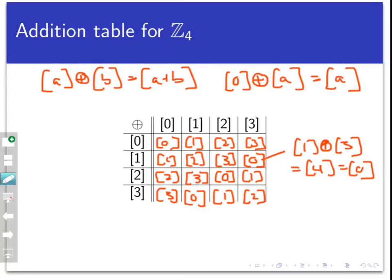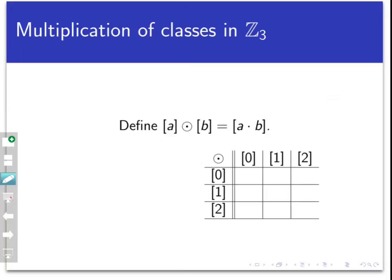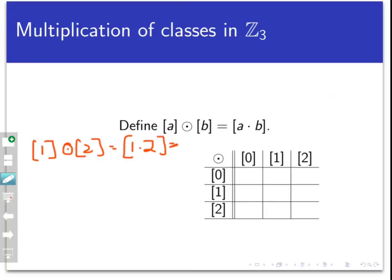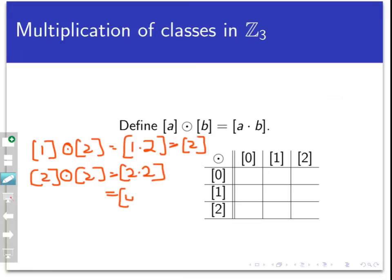We can also define multiplication on equivalence classes. Going back to ℤ₃, we define the product ⊙ of two classes to be the class of the regular product of the representatives. For example, [1] ⊙ [2] = [1 × 2] = [2], and [2] ⊙ [2] = [2 × 2] = [4] = [1], reducing mod 3. We can make a full multiplication table for ℤ₃. Multiplication of classes is commutative for the same reason addition was — ⊙ is defined in terms of regular integer multiplication, which is commutative.